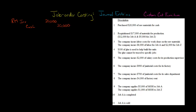Next, we take $17,000 of those materials and put them into production. Let's say they're all used as direct materials. So we're going to debit work in process inventory and credit raw materials inventory. We're just transferring the cost from one inventory account to another. Work in process is inventory we're working on — not completed yet, but being processed. The raw materials inventory account now has a balance of $3,000.